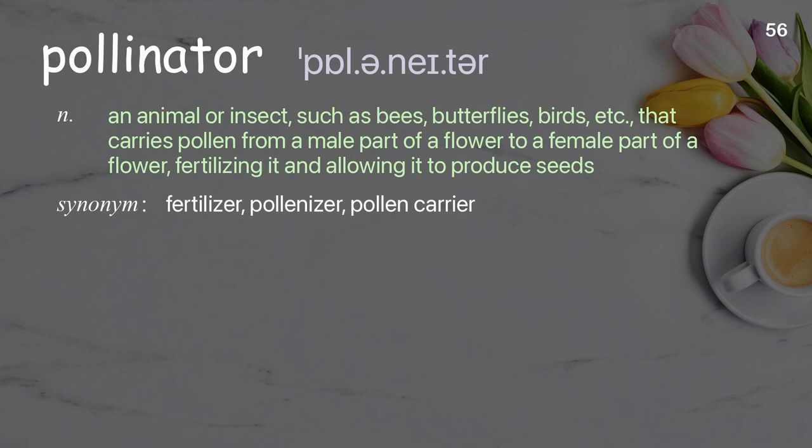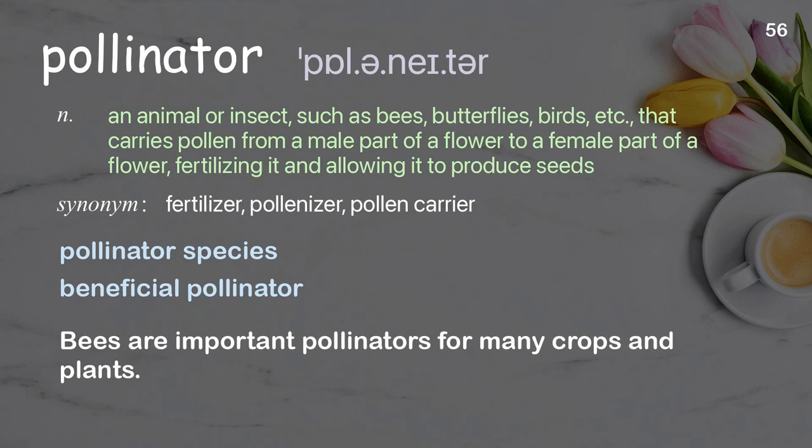Pollinator: An animal or insect, such as bees, butterflies, birds, etc., that carries pollen from a male part of a flower to a female part of a flower, fertilizing it and allowing it to produce seeds. Examples: pollinator species, beneficial pollinator. These are important pollinators for many crops and plants.